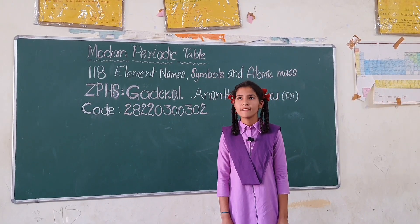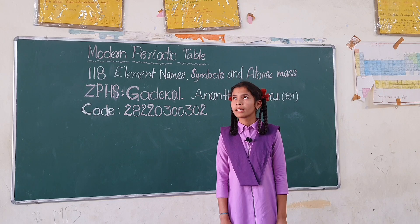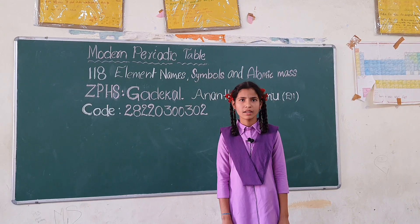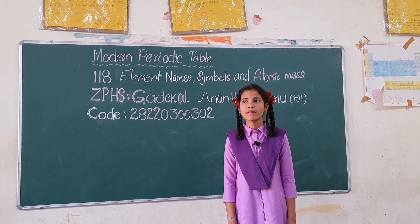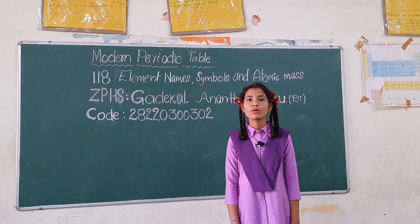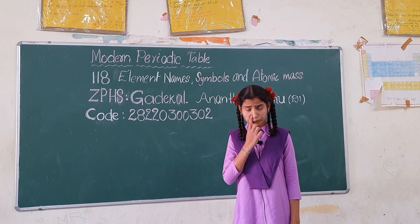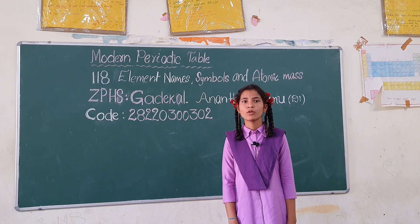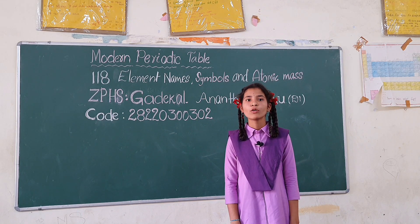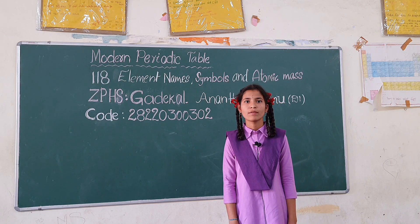Radon Rn 222, Francium Fr 223, Radium Ra 228, Actinium Ac 227, Thorium Th 232, Protactinium Pa 231, Uranium U 238, Neptunium Np 237, Plutonium Pu 244, Americium Am 243, Curium Cm 247, Berkelium Bk 247, Californium Cf 251.